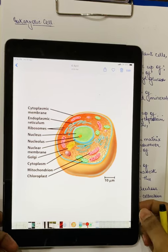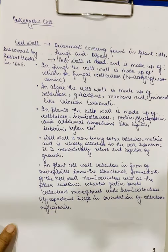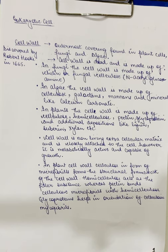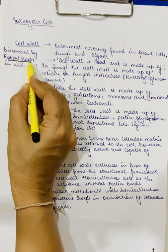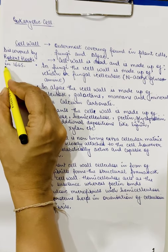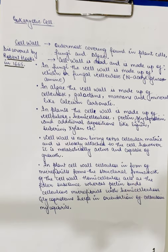First of all, we will be starting with the outermost part of the cell, that is the cell wall. Now, who discovered the cell wall? We have studied that while Robert Hooke was discovering the cell, the structure which he actually saw was a cell wall. So, Robert Hooke in 1665 was credited for the discovery of the cell wall.